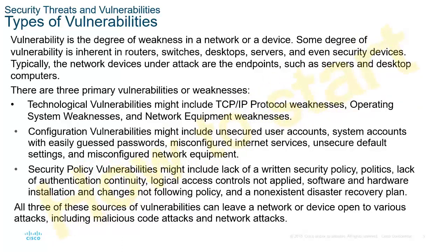The second type is configuration vulnerabilities. This includes unsecured user or admin accounts, system accounts, backup accounts, and misconfigured internet services. The use of default settings is a huge part of this, as is any other misconfigured networking equipment. The third is administrative vulnerabilities — a lack of written security policies. Administrative policies dictate security policies, and not having appropriate security policies makes it very hard to verify and audit the technical controls. Each one of these can leave a huge hole in overall network security.